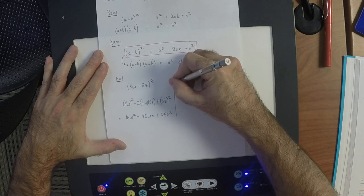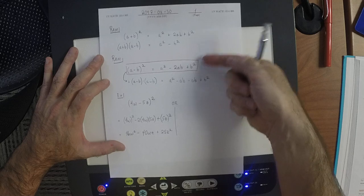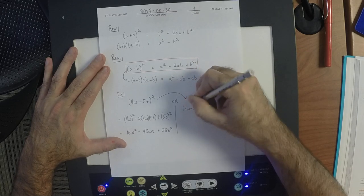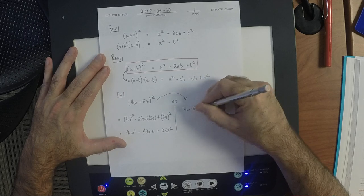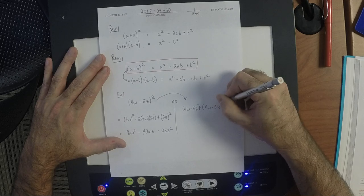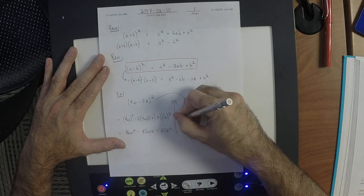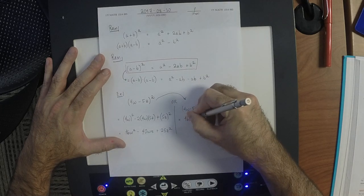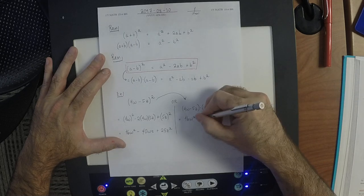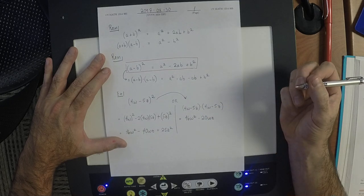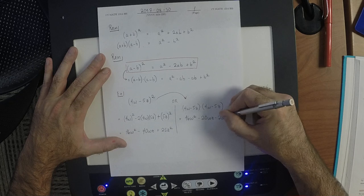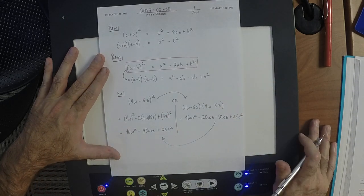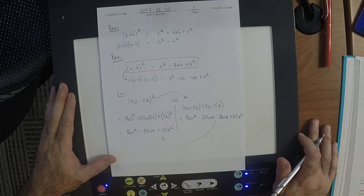Alternatively, if you don't want to use the formula, you can just write (4w - 5z)(4w - 5z) and FOIL it. The f term is 16w squared, the o term is -20wz, the i term is -20wz, and the l term is +25z squared. After combining like terms, you get the same result. There's more than one way to achieve it.